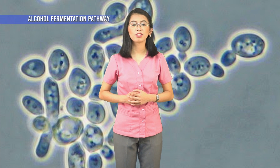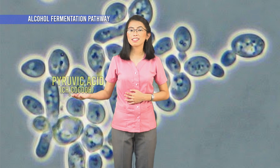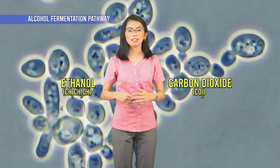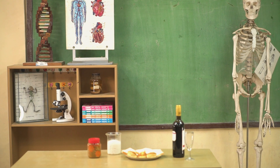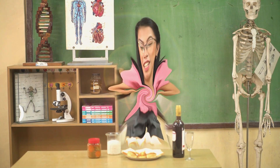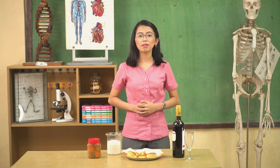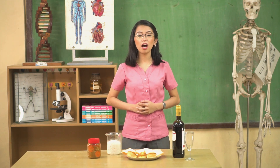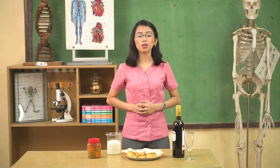The pyruvic acid then enters the anaerobic respiration alcohol fermentation pathway. Through this pathway, pyruvic acid gets converted to ethanol and carbon dioxide. In the production of bread, carbon dioxide is important as it gets trapped in the dough and makes it rise, resulting in a leavened bread. Without this process, we get an unleavened bread. The ethanol, however, gets evaporated during the baking process.